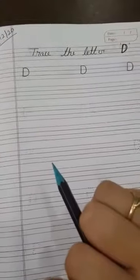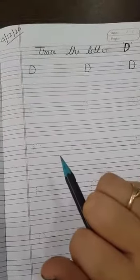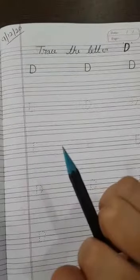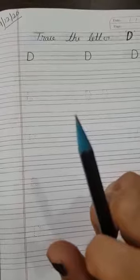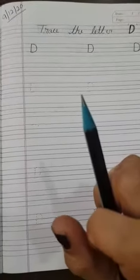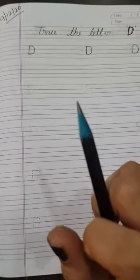Today also, we are going to trace the letter D. D for dog, D for duck, D for doll, and D for drum.